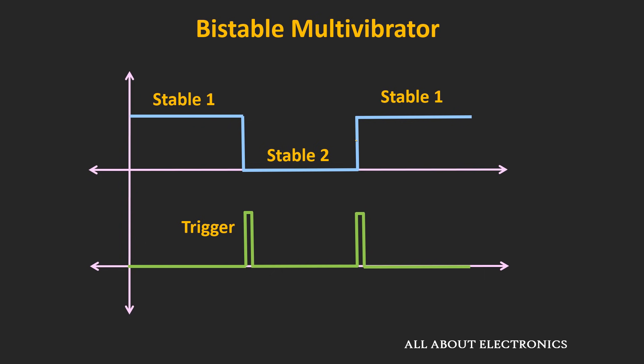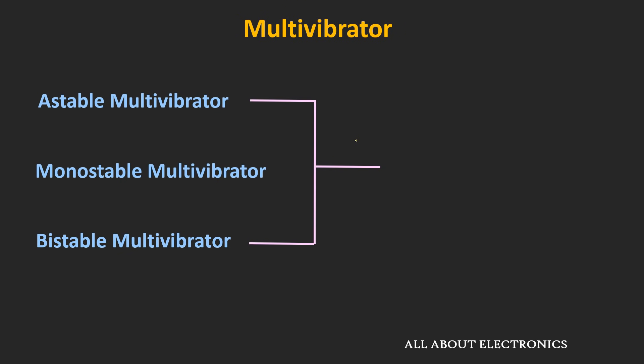This type of bistable multivibrator is used in the design of flip-flop. These are the three types of multivibrators which are used in the design of different electronic components. And these three types of multivibrators can be designed using either op-amp, transistor or using the 555 timer ICs.